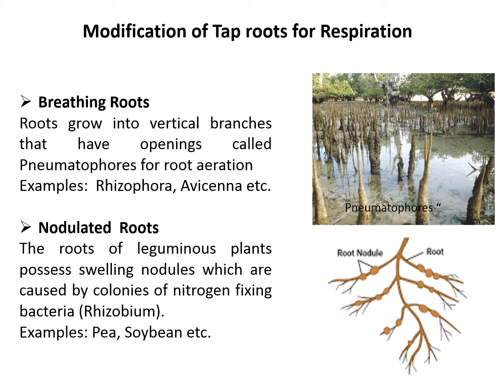Nodulated roots: the roots of leguminous plants possess swellings called nodules. These nodules actually shelter nitrogen-fixing bacteria called Rhizobium. They help in fixing atmospheric nitrogen into nitrates that can be absorbed by the roots. Examples are pea and soybean.